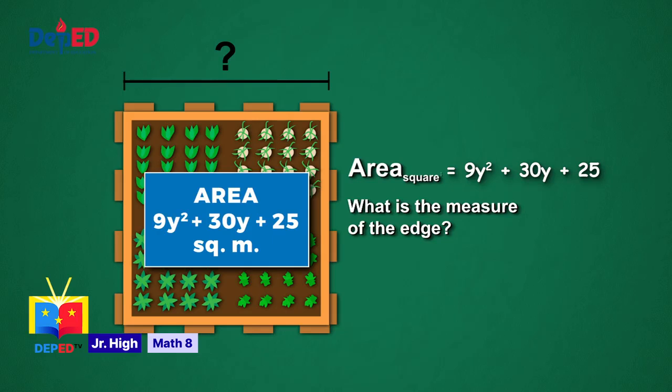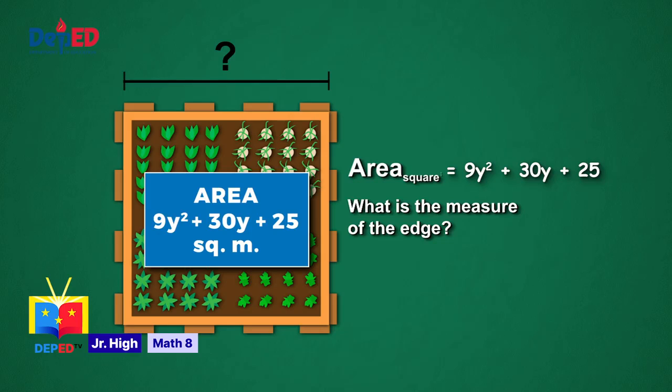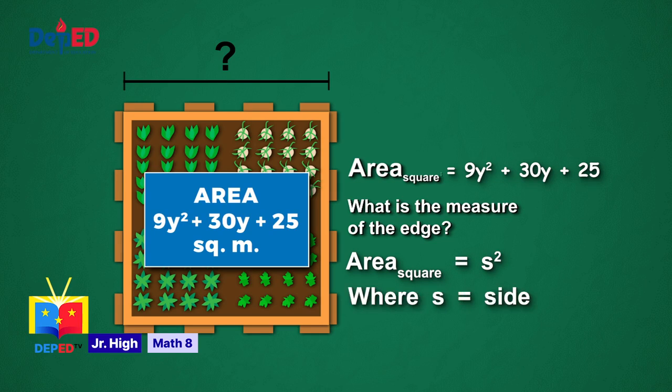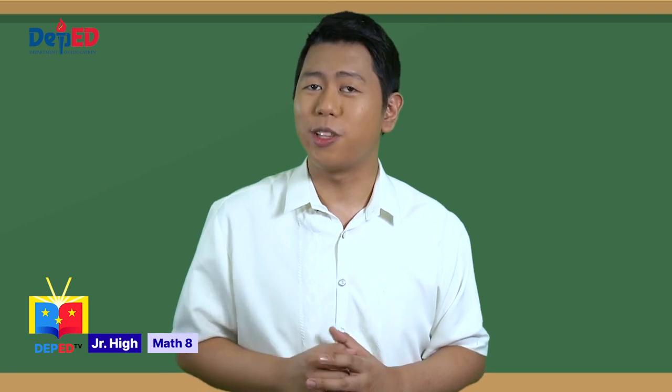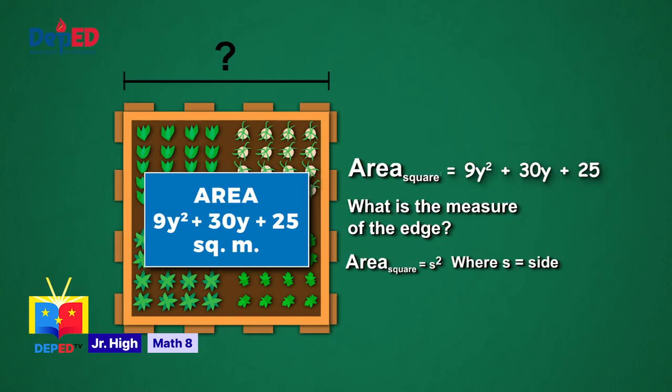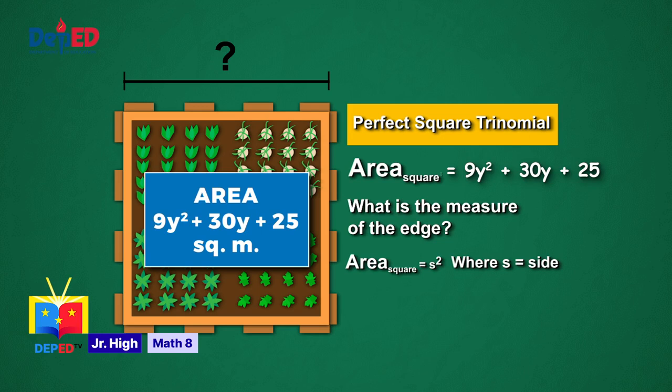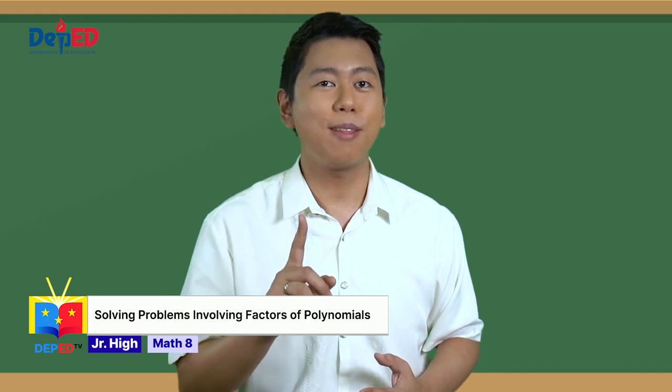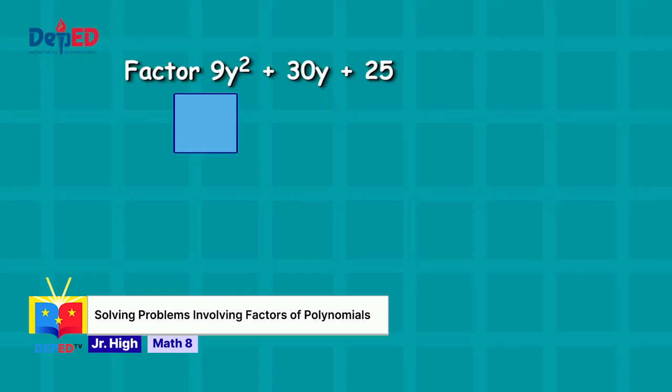Now, we analyze what we have and what we need in order to solve this problem. How can we get the length of the edge with the area of the square garden? What do we know about the area of the square? The area of the square is just the side multiplied to itself or S squared. How about the given polynomial? What did you notice? It has 3 terms. What else? The polynomial is also a perfect square trinomial. So it can be expressed as a square of a binomial and that binomial is the answer to the problem.